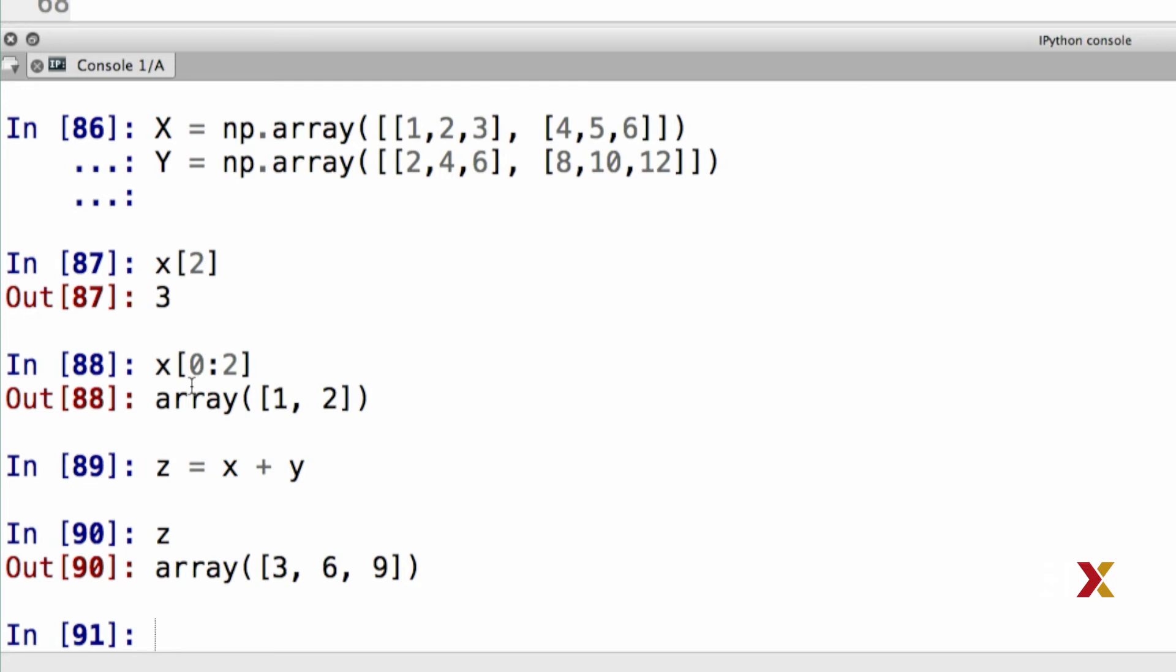In this case, the elements of z will be element-wise additions from the vectors x and y. So the first element of x is added to the first element of y, and so on.